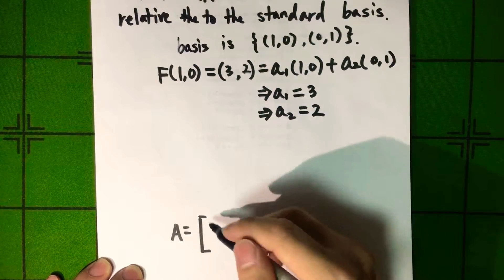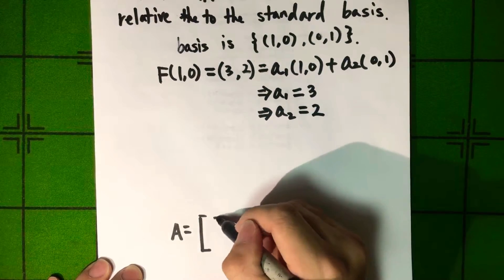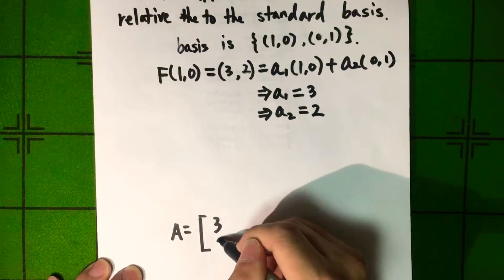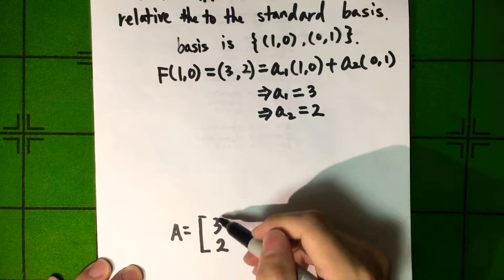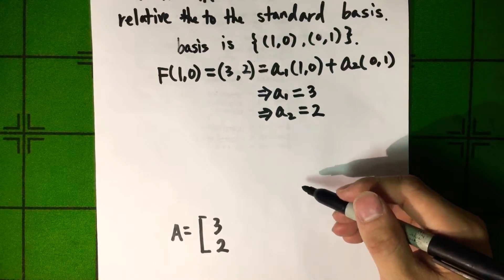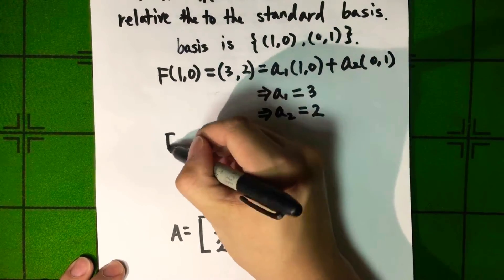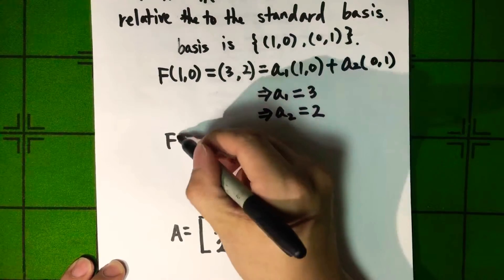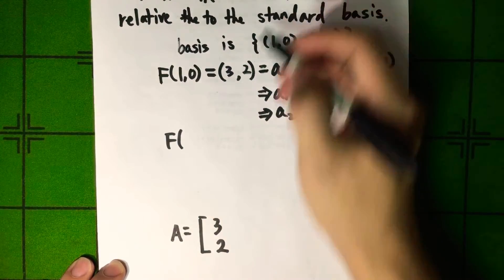We denote the matrix to be A and write this A1, A2 vertically. And then we plug in (0, 1) into the function again.